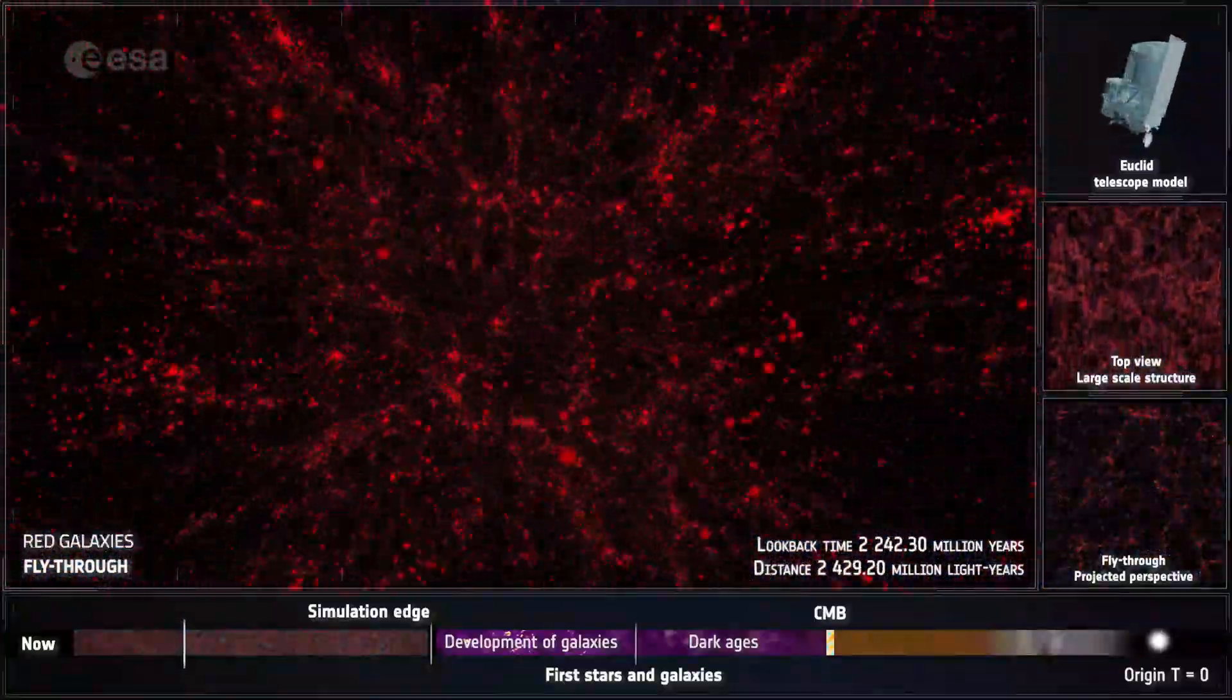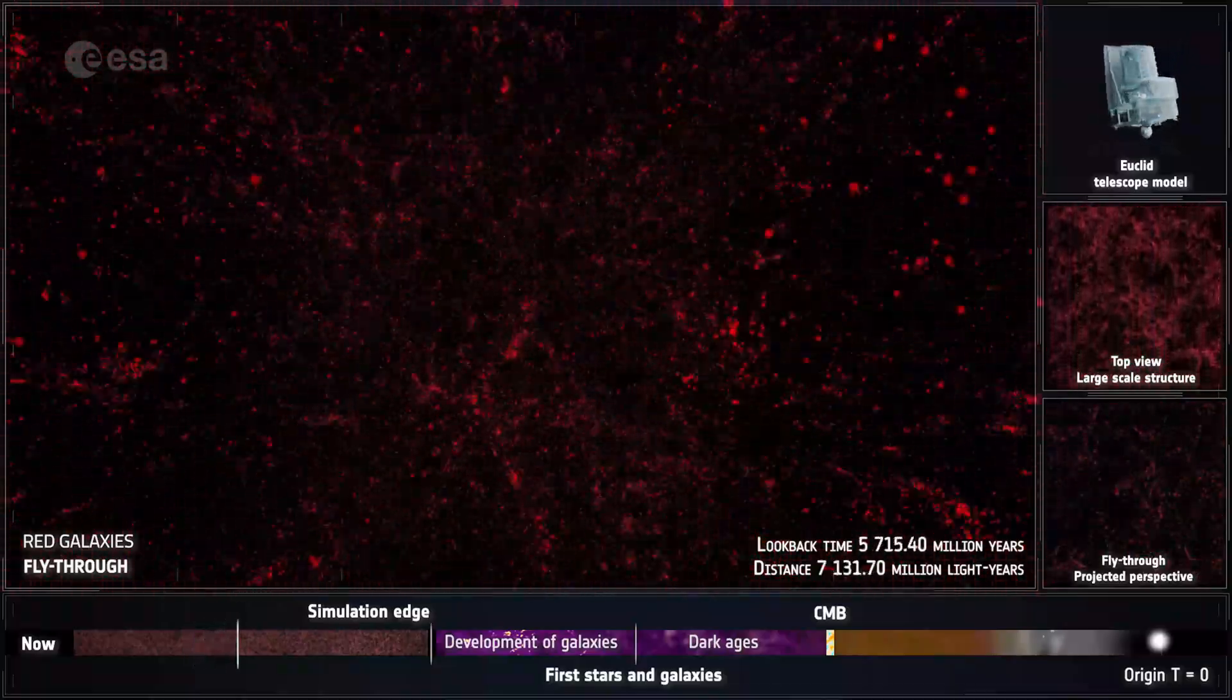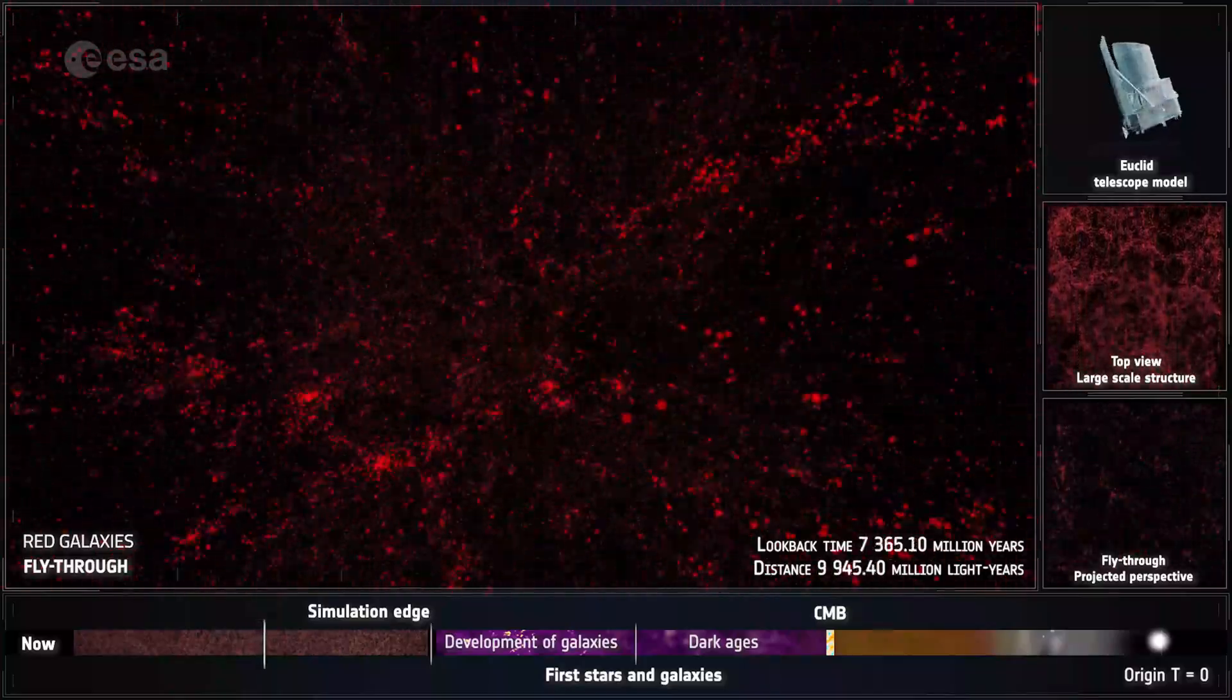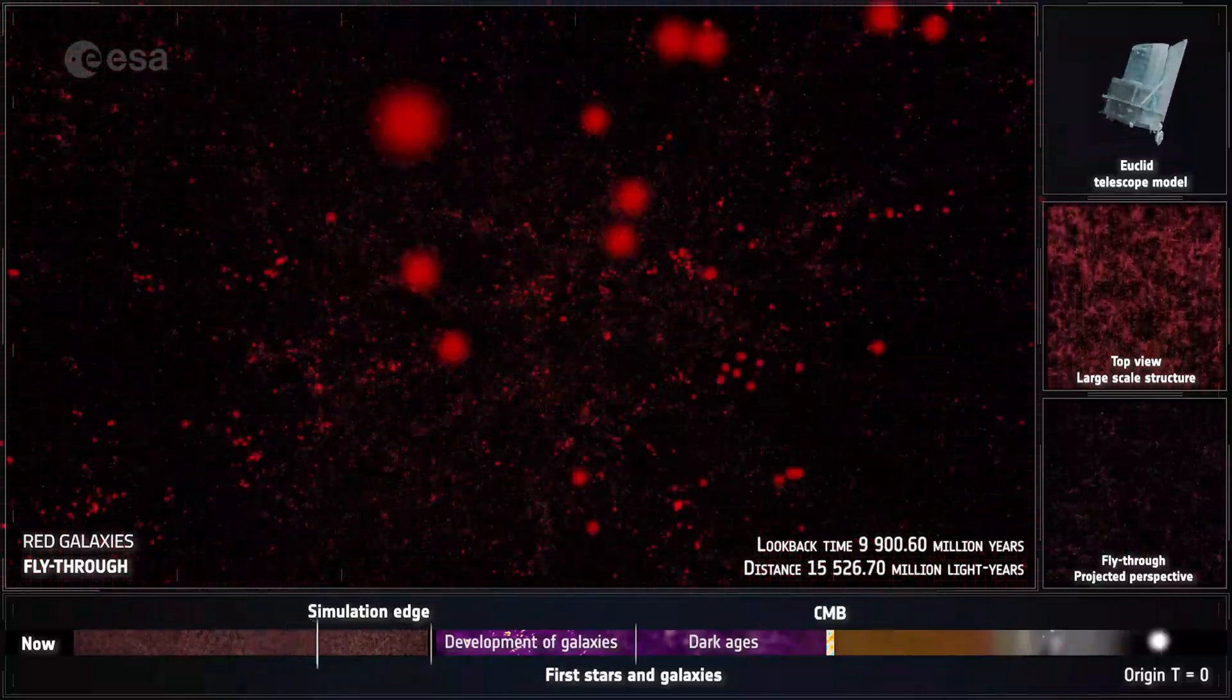Euclid's flagship simulation allows us to visualize the universe from different points of view, giving us a better understanding of the evolution of the formation of structure in our universe over time.